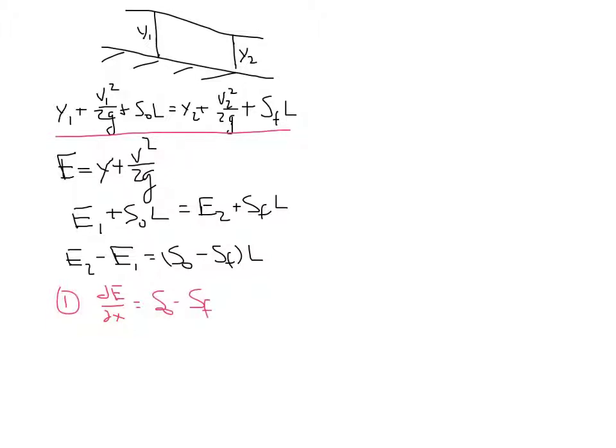A second approach would be to say that if we're talking about uniform flow, then we know that S0 equals SF. That leads to the Manning equation that we discussed in the last lecture.